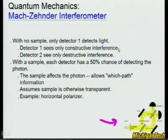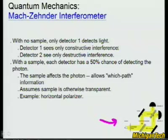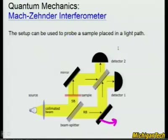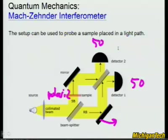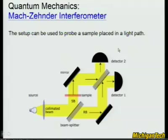With a sample, each detector has a 50% chance of detecting the photon. The sample affects the photon and allows which-path information if there is a sample. You must assume that the sample is otherwise transparent. For instance, if you put a horizontal polarizer here, you would be able to tell the photons apart going around. Once you can tell the photons apart, they can't take both paths, because once they hit the detectors you would know which ones were which. So with a horizontal polarizer, you get 50% of the photons here and 50% there. Take the polarizer away and they constructively interfere, taking both paths again — 100% here and 0% there.